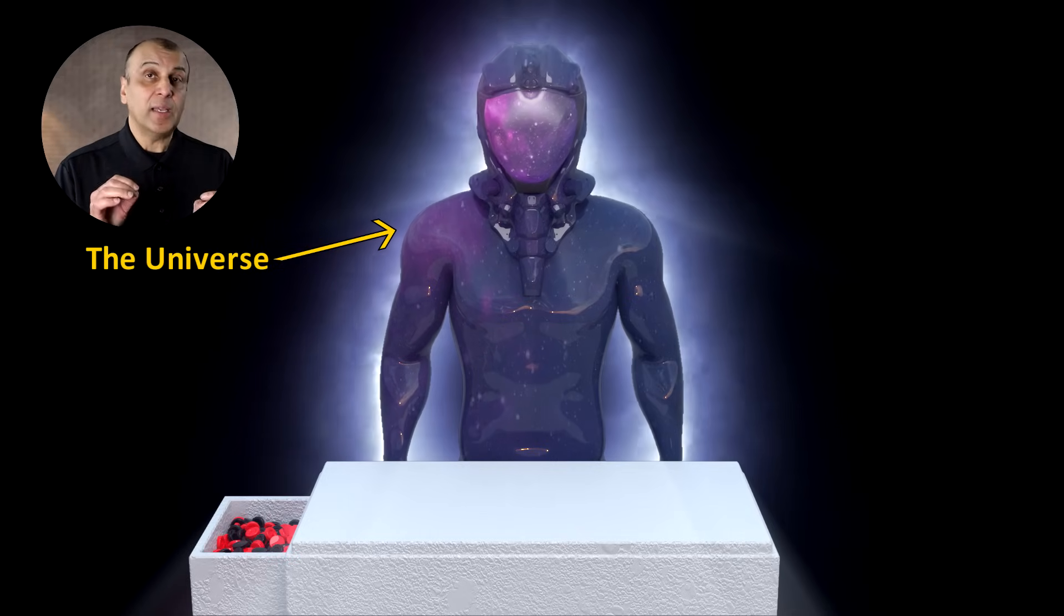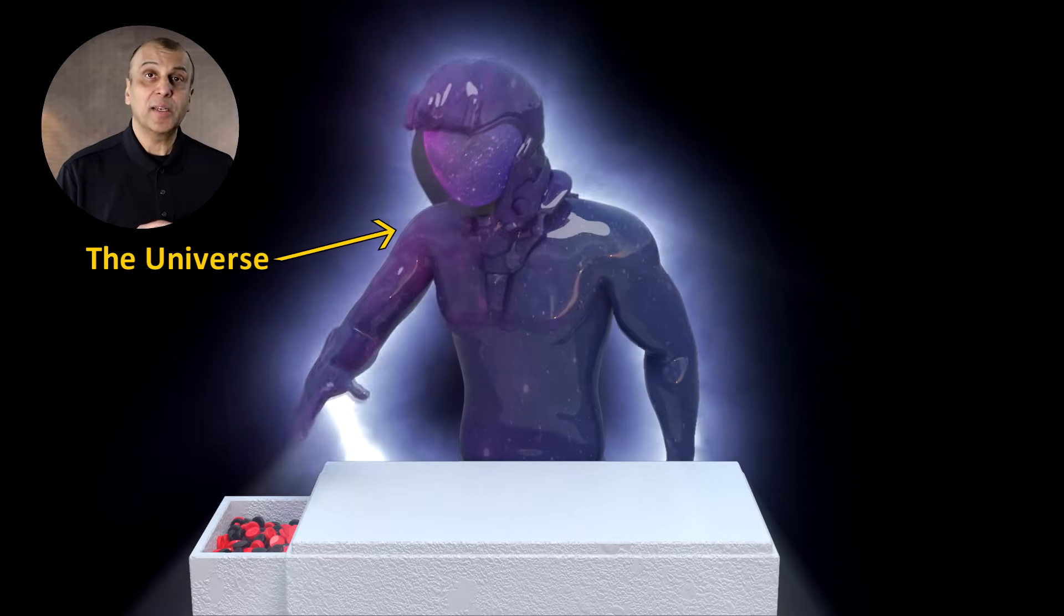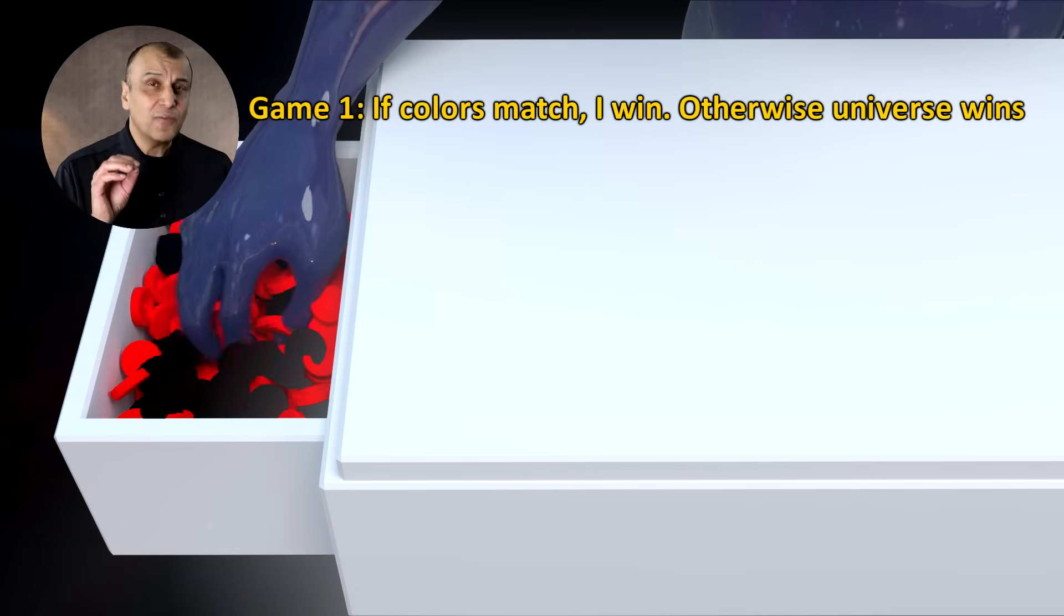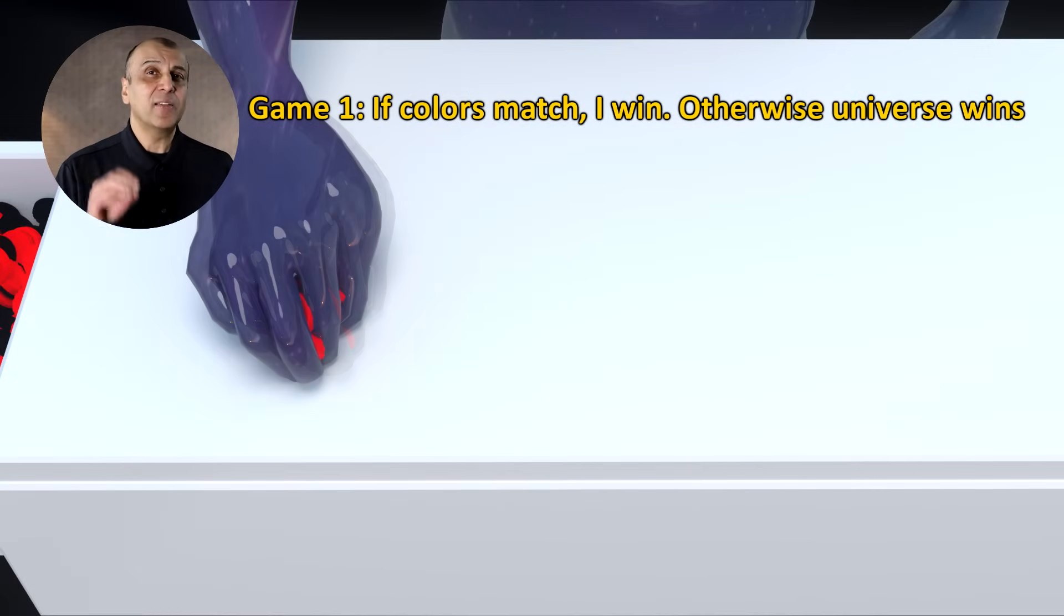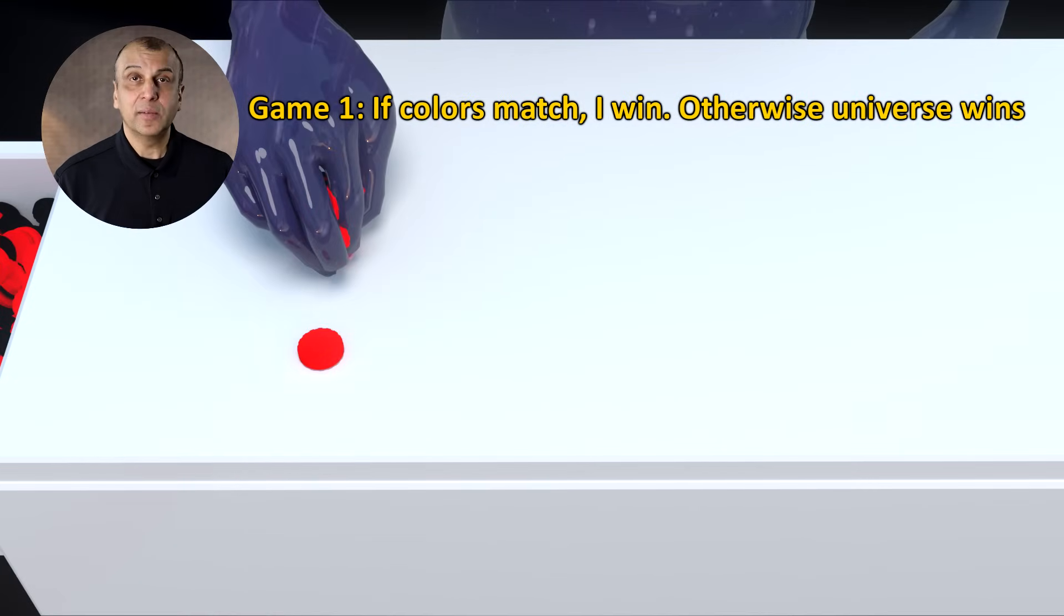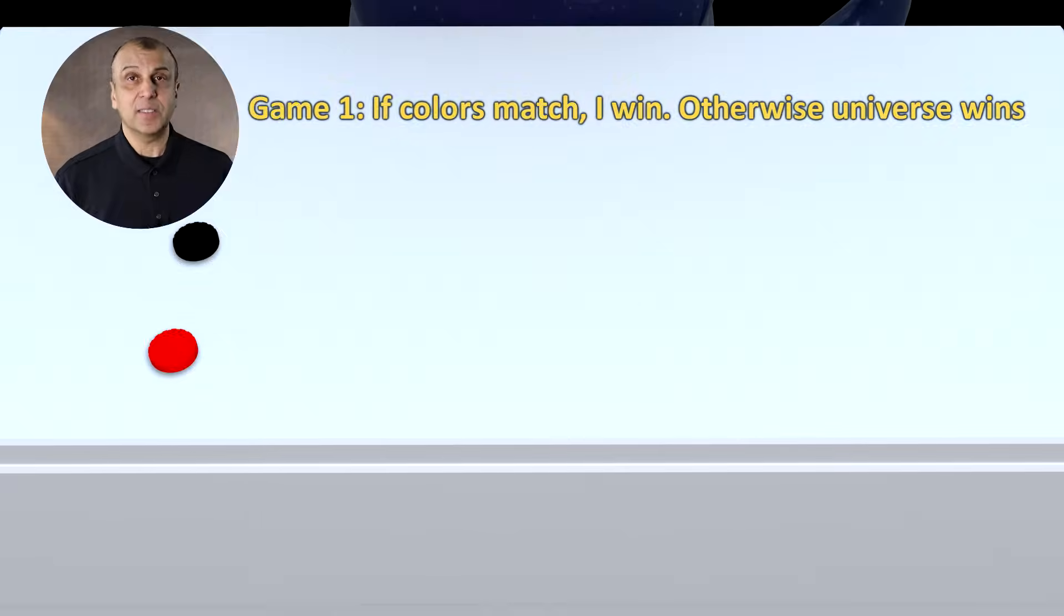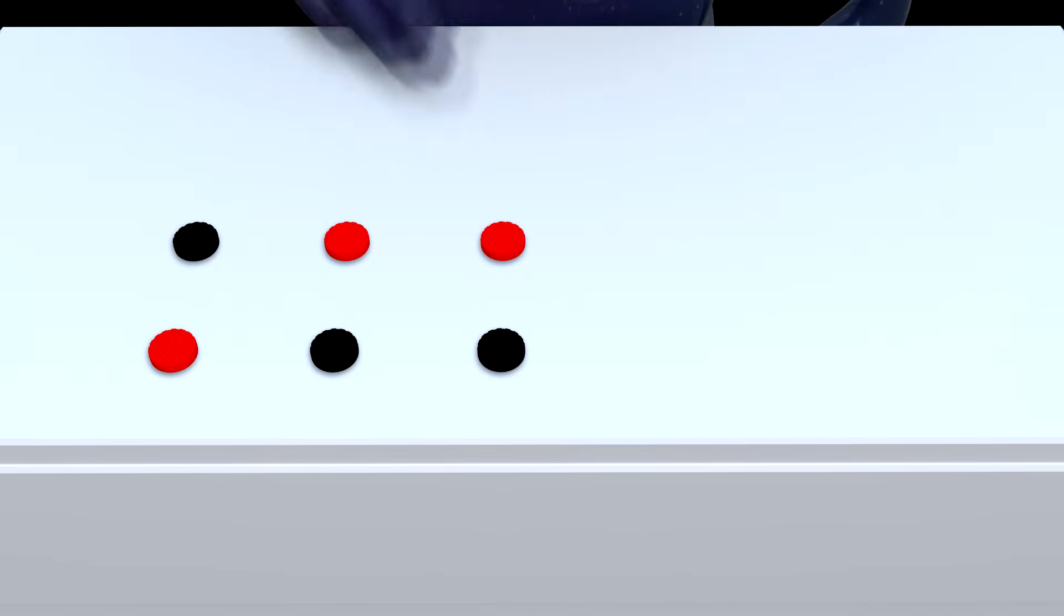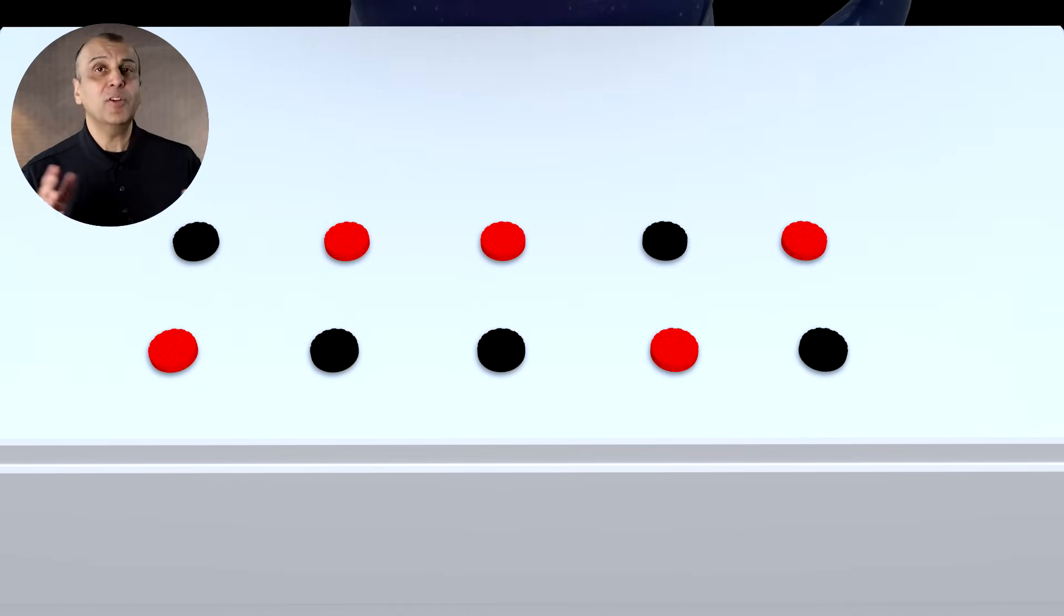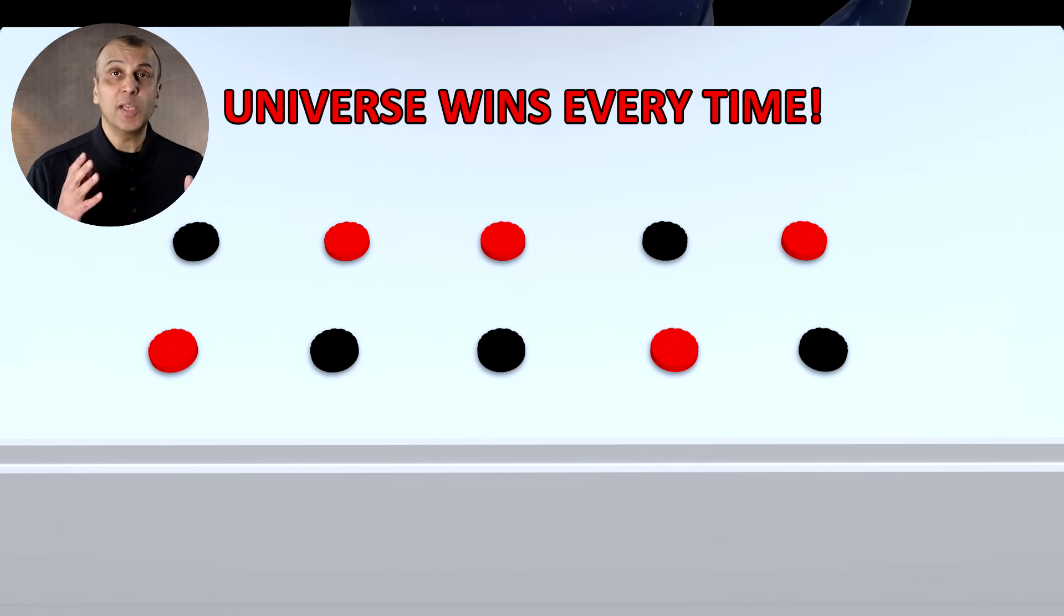If I guess the color correctly, I win. If I'm incorrect, the universe wins. In the first game, I declare that if the colors match, I win. The universe picks the pieces. Now in play after play, I find that I lose every time.